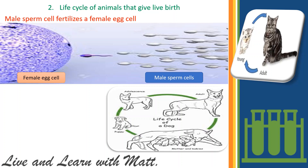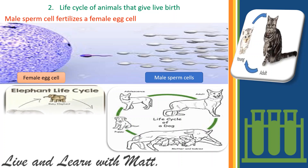These animals are split into two groups. Group one: mammals. Examples of mammals include dogs, cats, elephants, horses, cows, buffaloes, rats, whales, dolphins, seals, and humans.